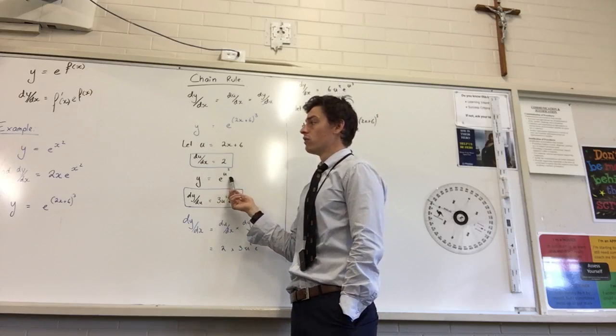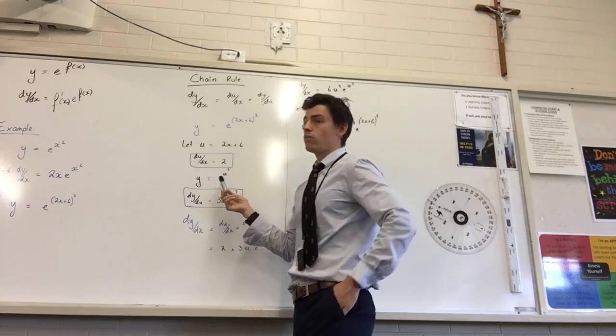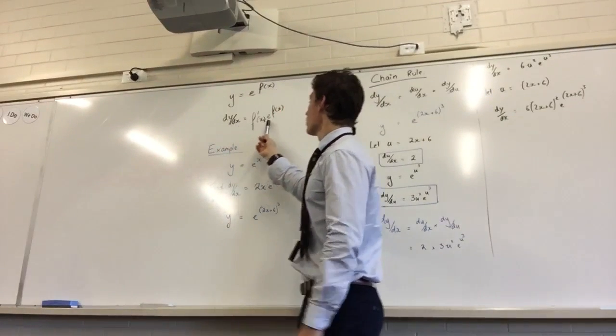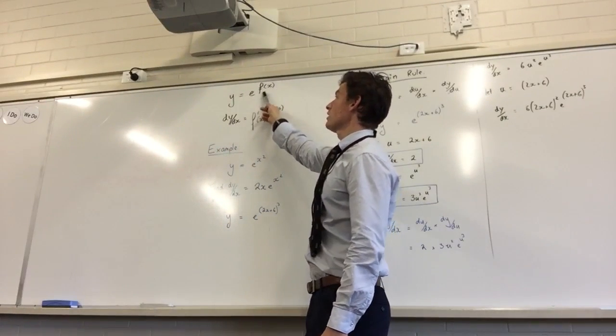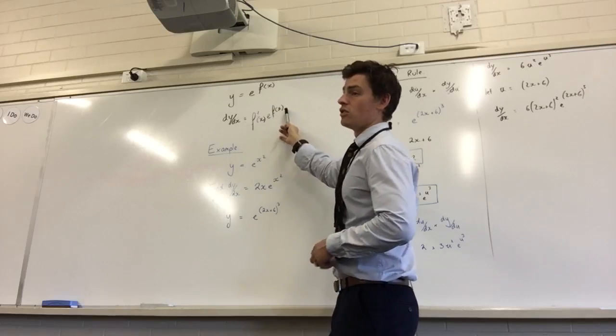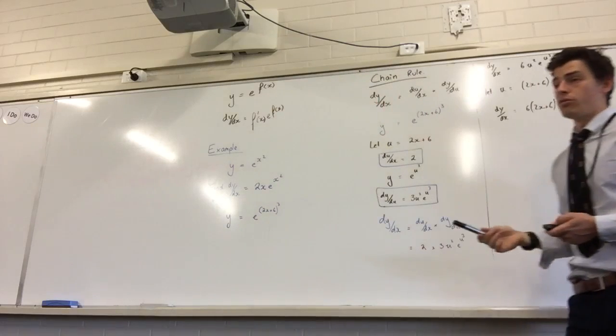What's the rule for exponentials? Up here. Somewhere. There we are. F dash x. Oh sorry. E to the f x. The derivative is f dash x e to the f x. Can you derive u to the power of 3?